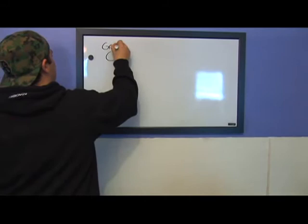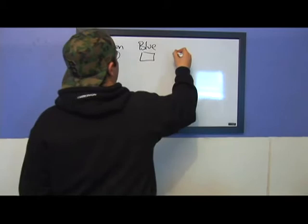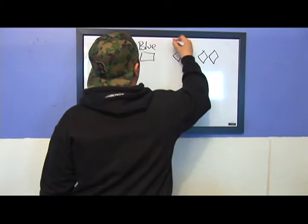You have your green circle, your blue square, and then you can either have one diamond or two diamonds, but either way they're both going to be black.